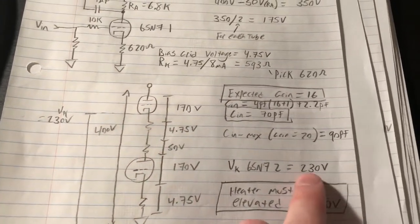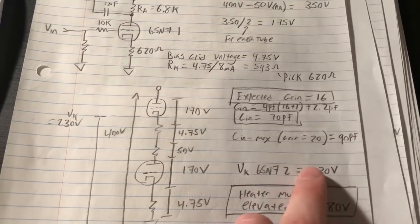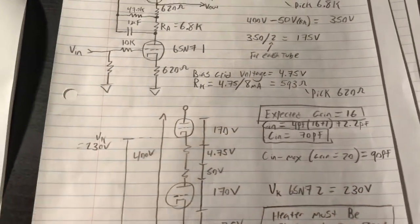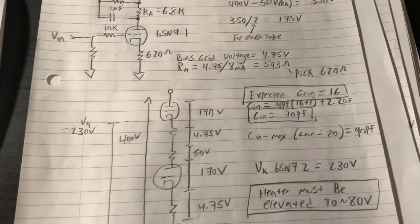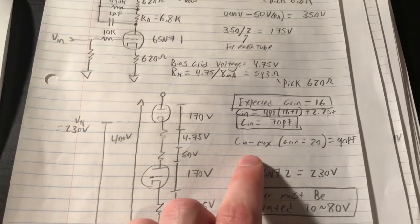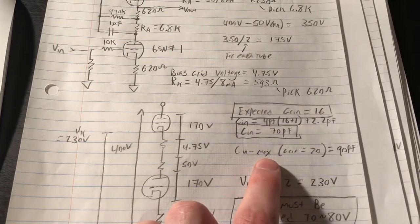If we elevate the heaters by 80 volts, then 230 minus 80, we get some additional margin for signal swing before we violate that 200 volts spec.